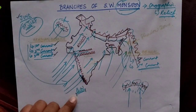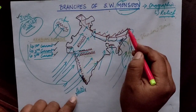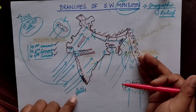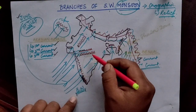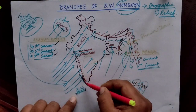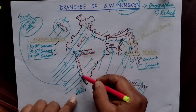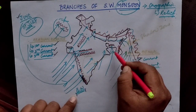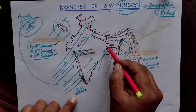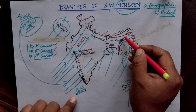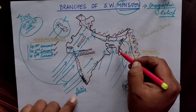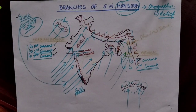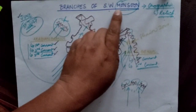The key relief features shown include the Himalayas and their extensions, Arakan Yoma in Myanmar, the Aravalli mountains, the Satpuras, Vindhyas, Western Ghats, Purvachal mountains, Garo-Khasi-Jaintia Hills, and the Naga Hills and Mizo Hills. These features play a very important role in the distribution of monsoon rainfall.